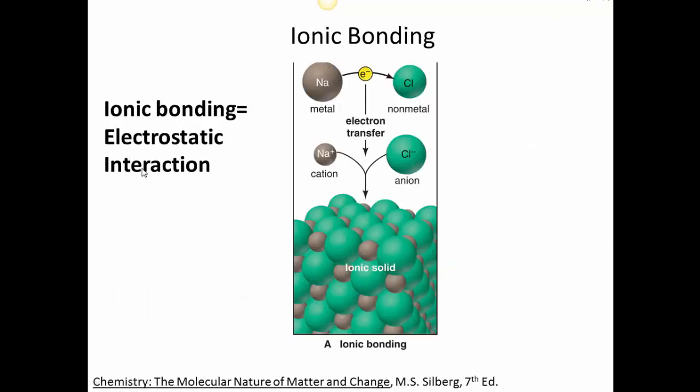In ionic bonding, you have an electrostatic interaction, so you have an interaction between a cation and an anion that pack together to form this ionic solid. These cations and anions typically form through the transfer of an electron.